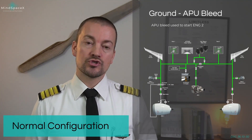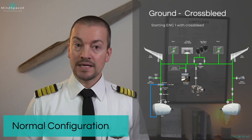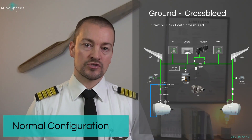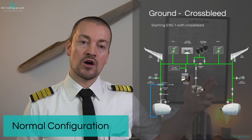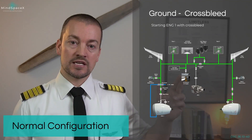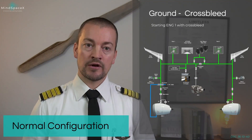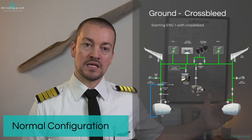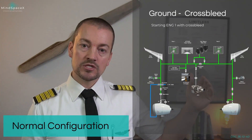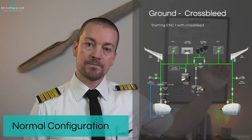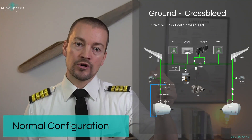If we need to start the other engine from the running engine, we call that a cross-bleed engine start. This could be necessary if, for example, the APU has failed after the first engine start, or if a manual engine start was performed using the ground air connection. A cross-bleed start is a supplementary technique procedure applied from the FCOM supplementary procedure chapter. In this case, the APU will not be supplying any bleed air; instead, bleed air is taken from the running engine, and with the cross bleed valve open, that air is supplied into the starter motor on the other engine.